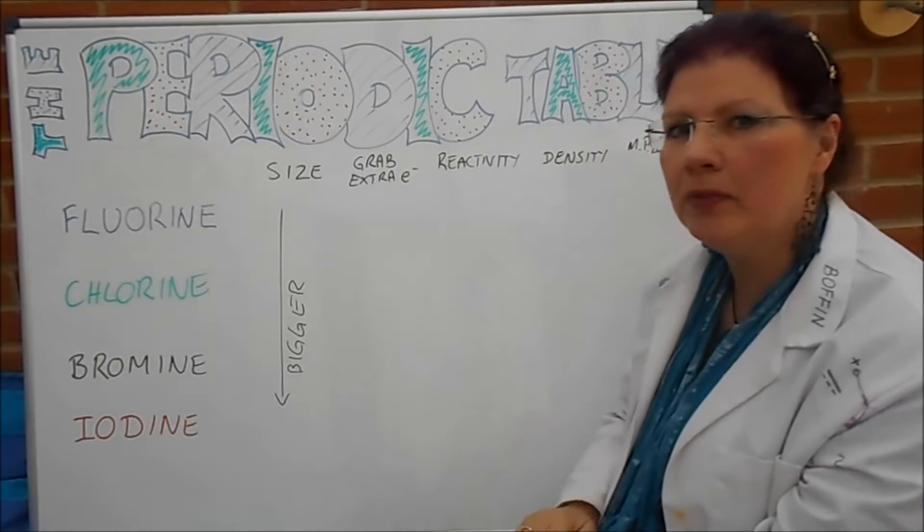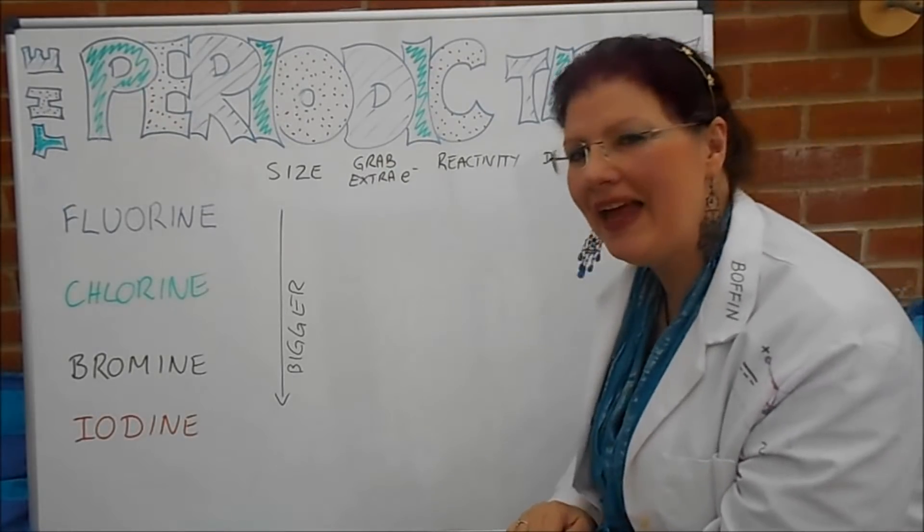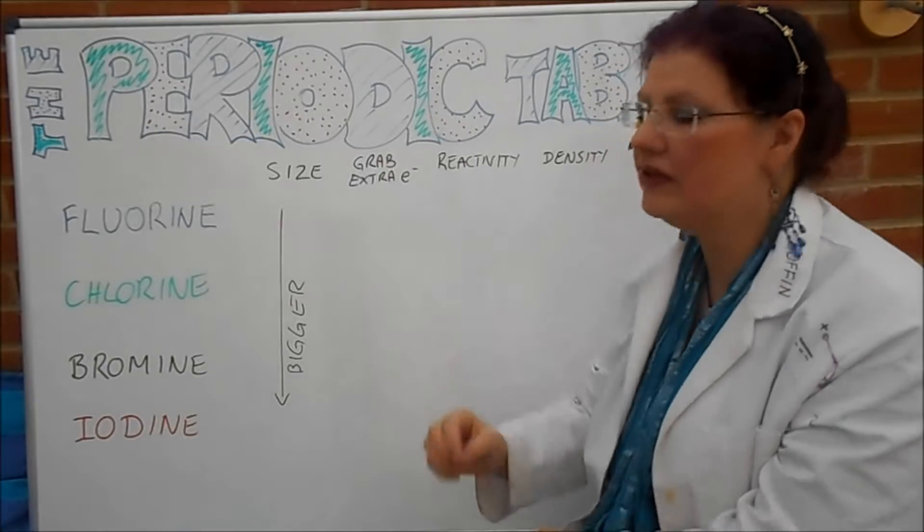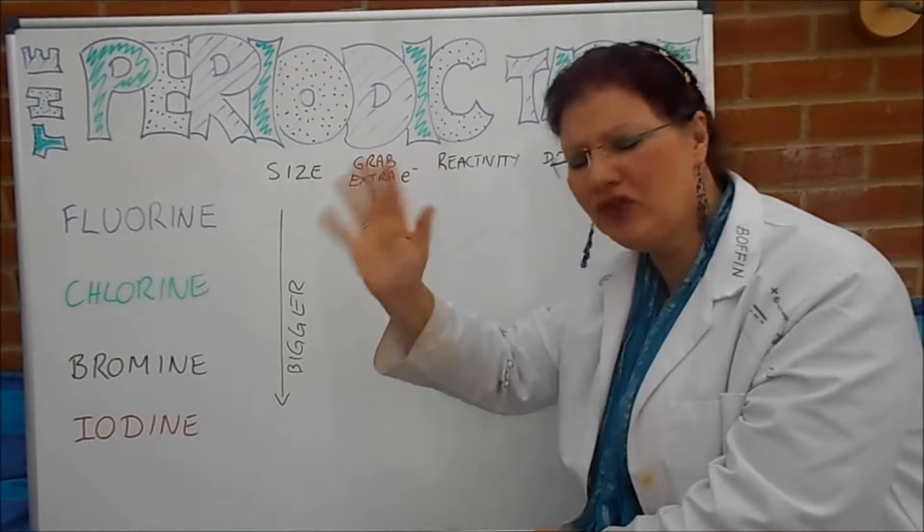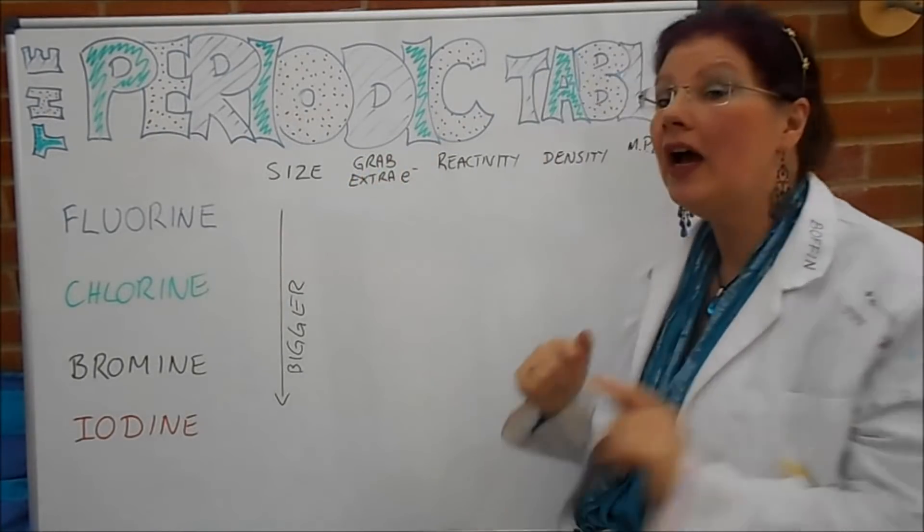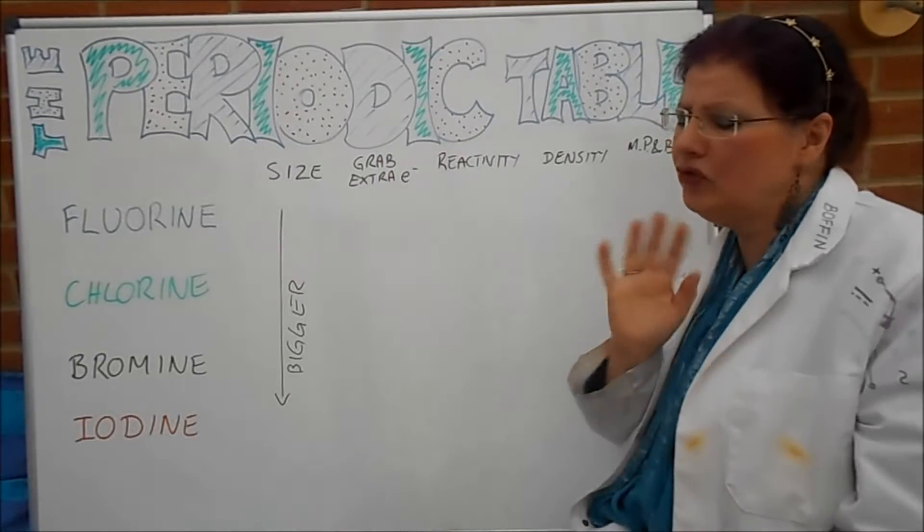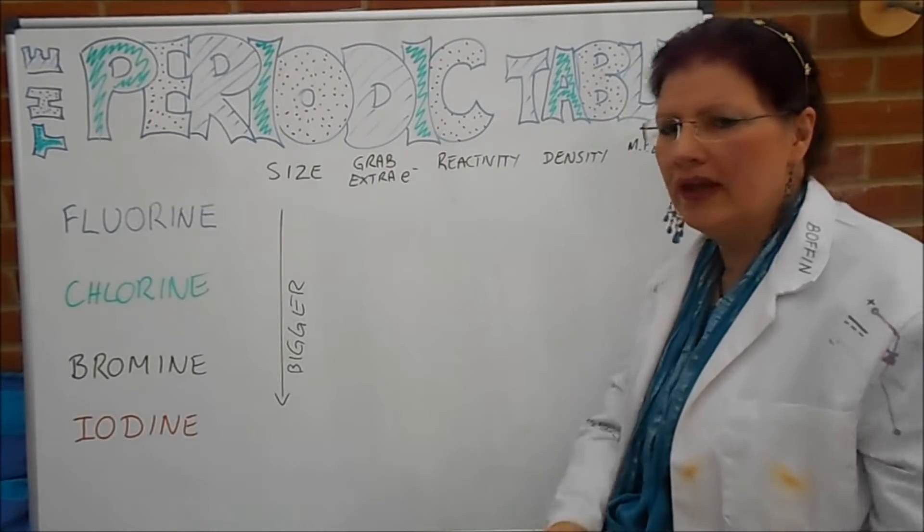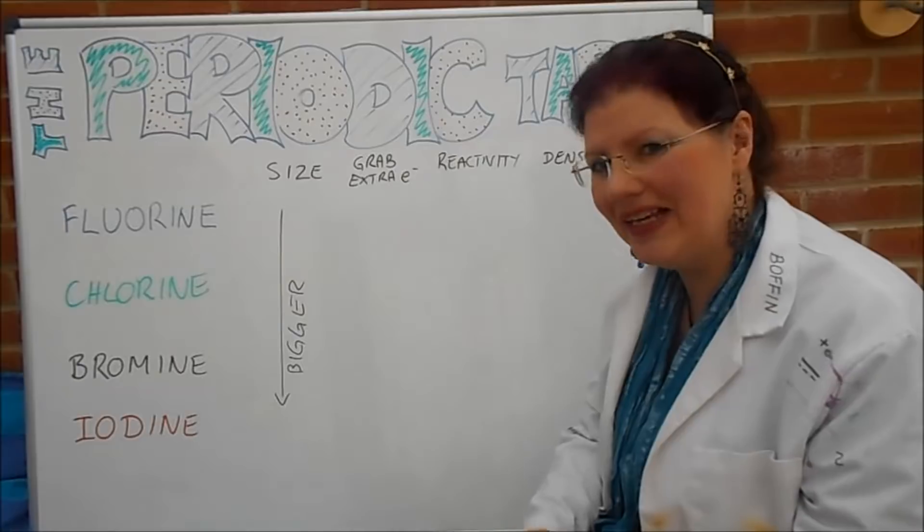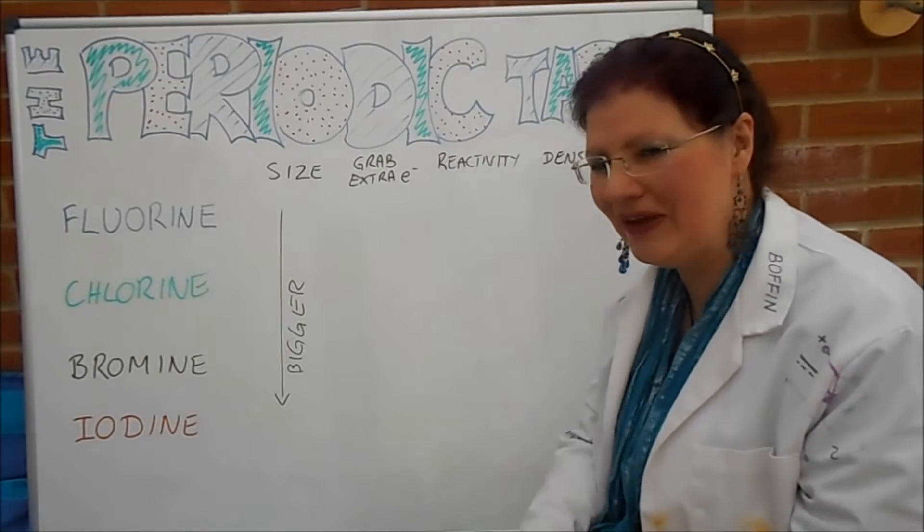So here's the first pause for you. You've got this spare outer electron. Let's say there's a fluorine over here going "extra electron, yes, I want you," and iodine over here going "extra electron, yes, I want you." Which one is going to get the electron? Pause the video, have a think about that.